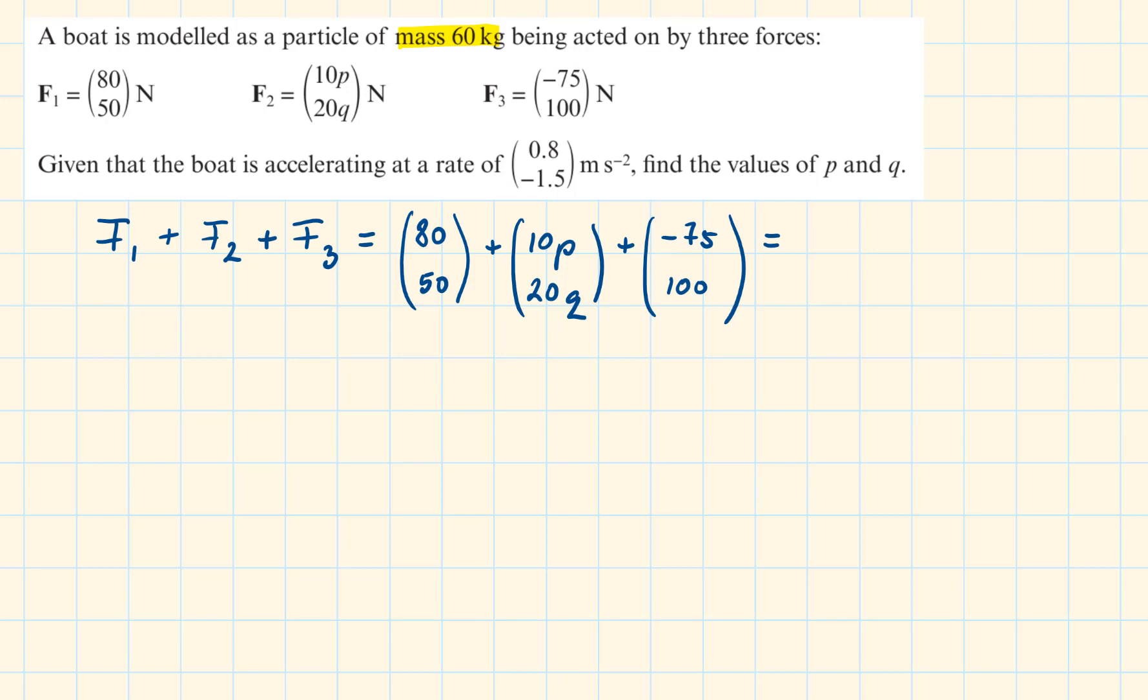Simplifying this is equal to 5 plus 10P. Adding the y values, we will have 50 plus 20Q plus 100. Simplifying this, we will have 150 plus 20Q newtons.